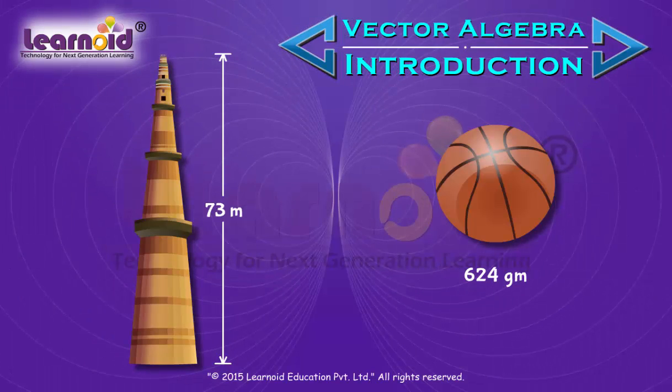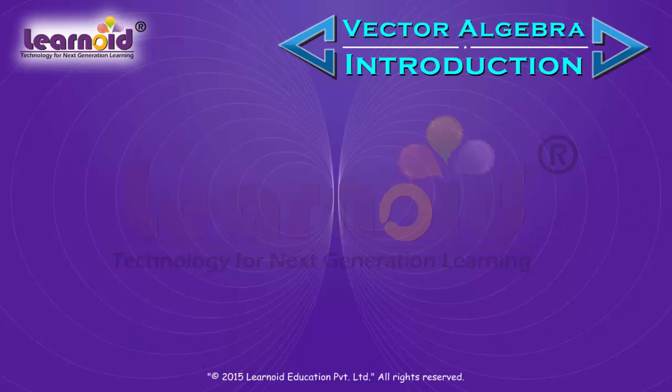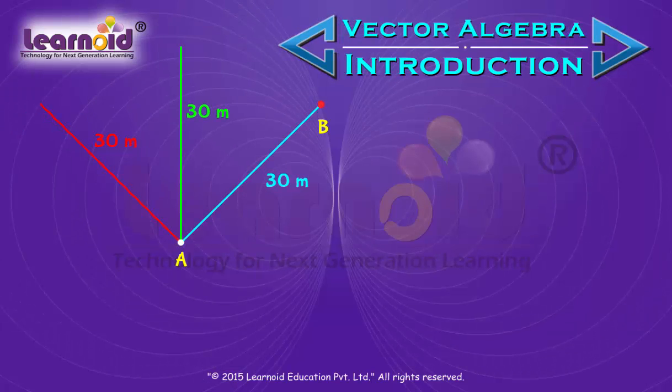But sometimes we need to answer questions like, how much should I walk to reach point P from point A? If say 30 meter, then it is not enough information. I can walk 30 meter in any direction from point A.